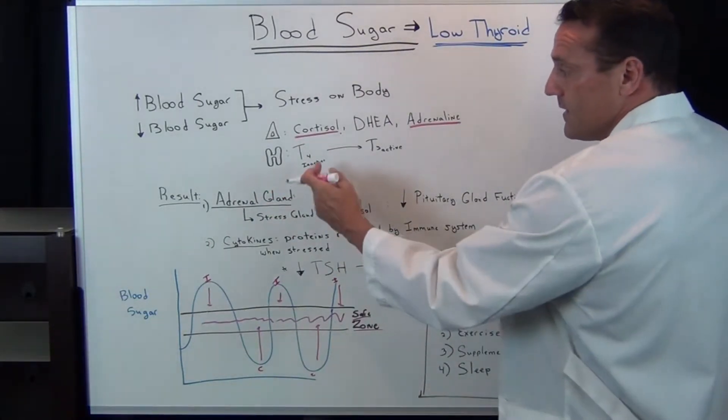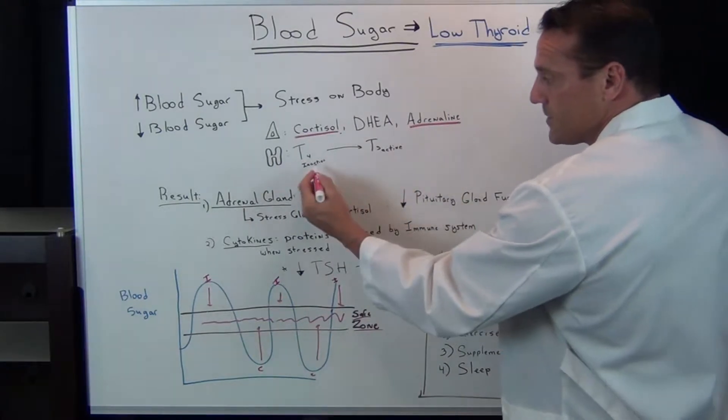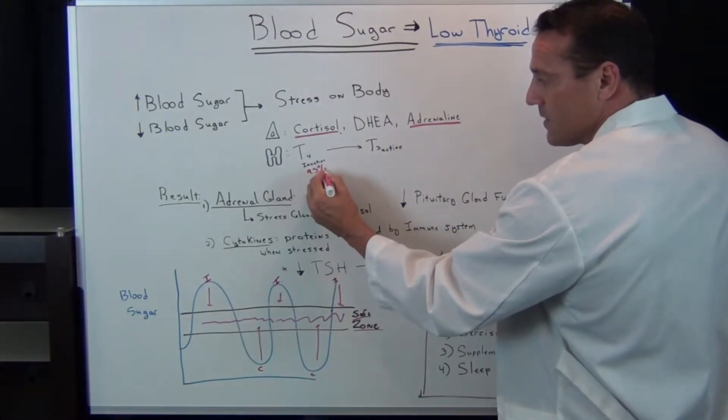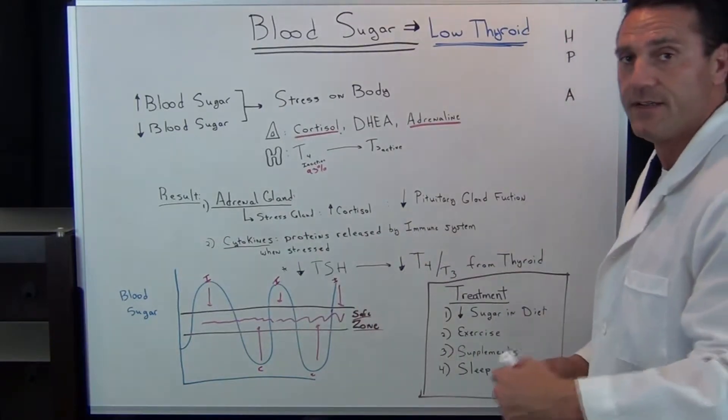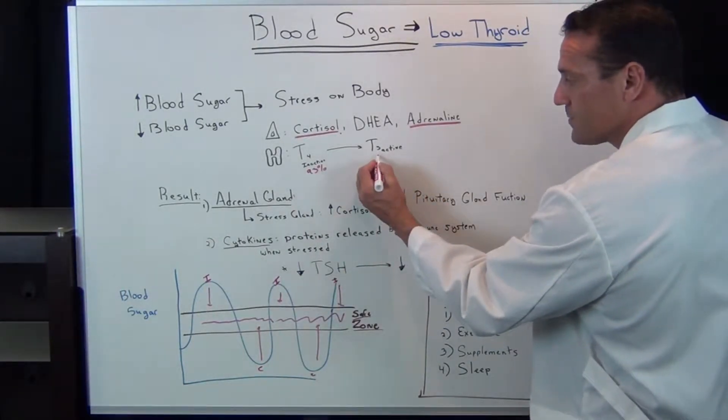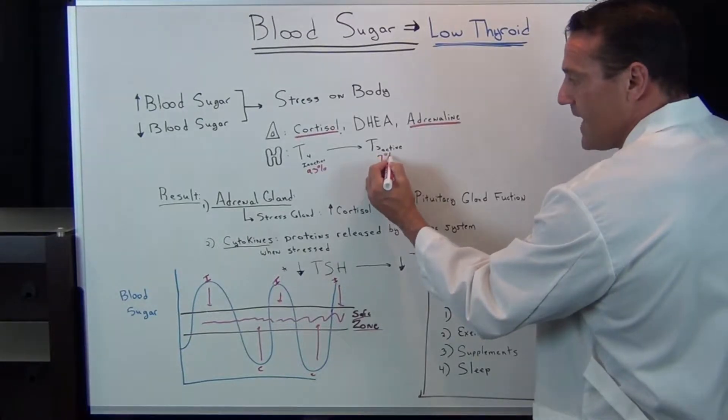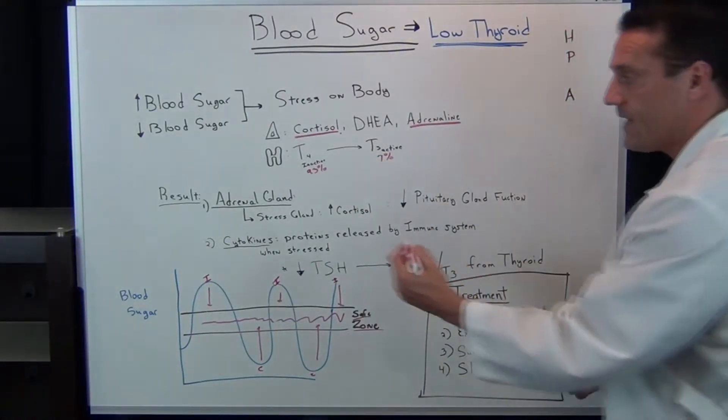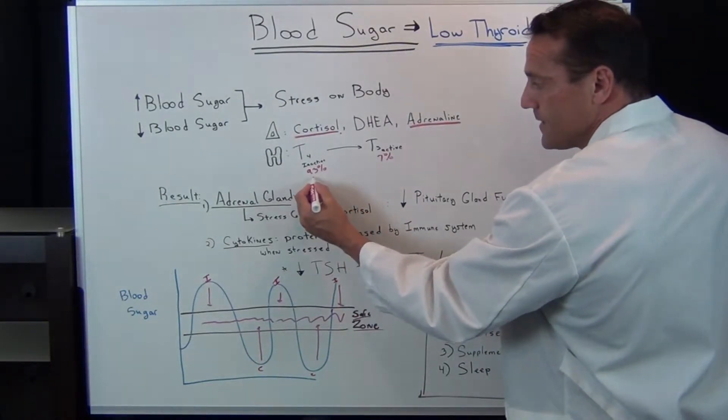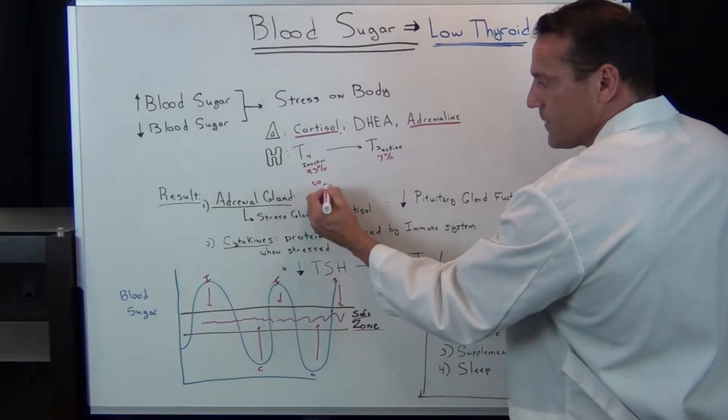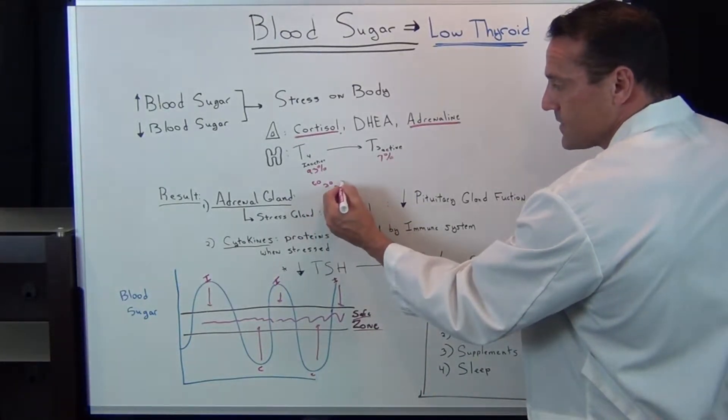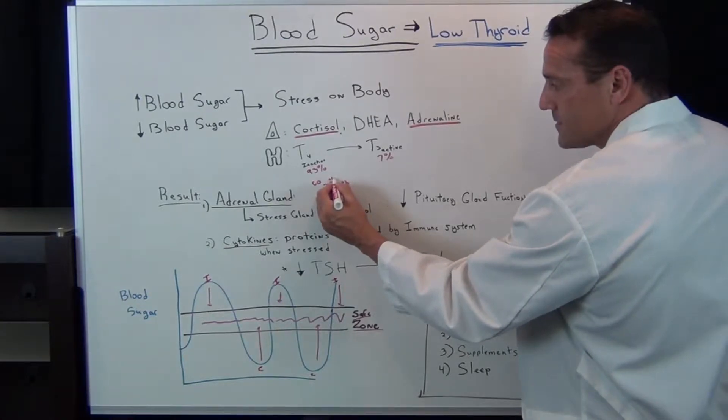We produce T4 and T3. We produce 93% inactive T4 that gets converted into usable T3. However, we're still producing about 7% active T3 from your thyroid gland. The inactive T4: 60% gets converted in the liver, 20% in your gut, and 20% in target tissue.